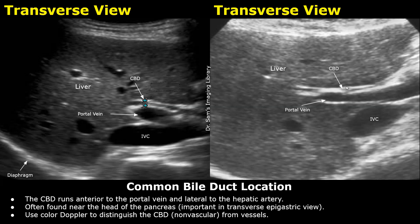Because vascular structures such as the portal vein and hepatic artery lie in close proximity and can appear similar on grayscale imaging, color Doppler is essential to differentiate the CBD, which shows no color flow, from adjacent vascular structures that demonstrate flow. You will not see any color Doppler signals in the common bile duct.